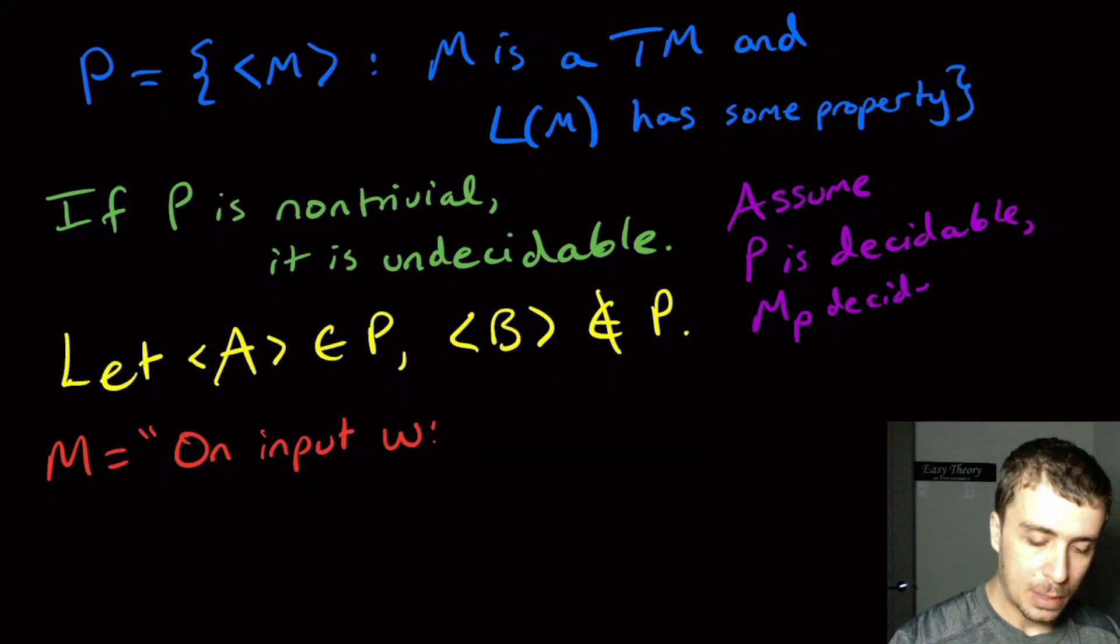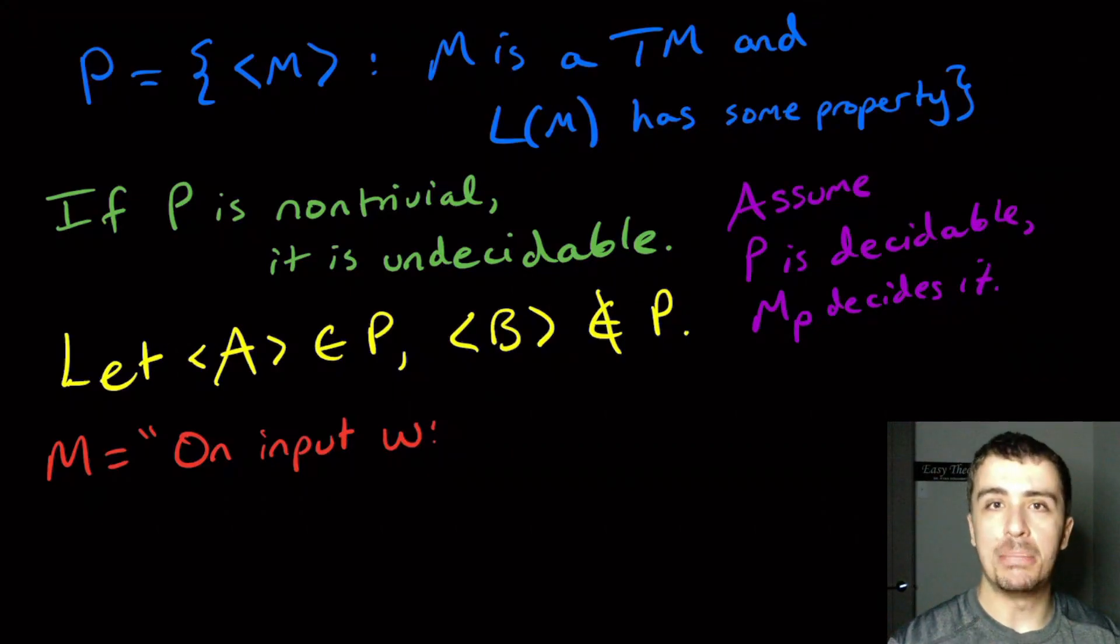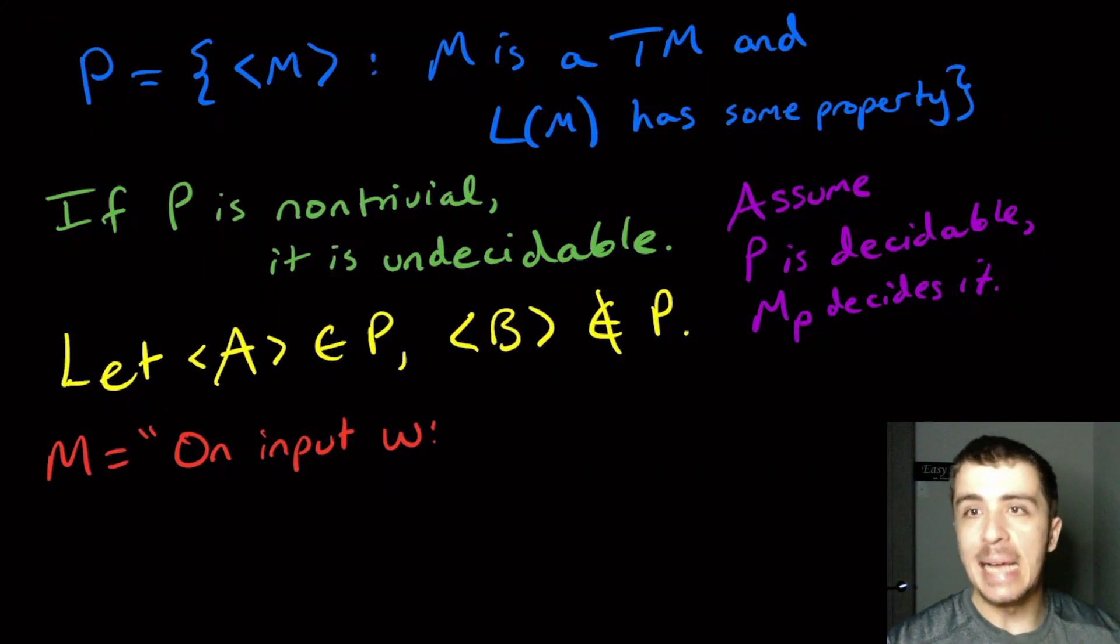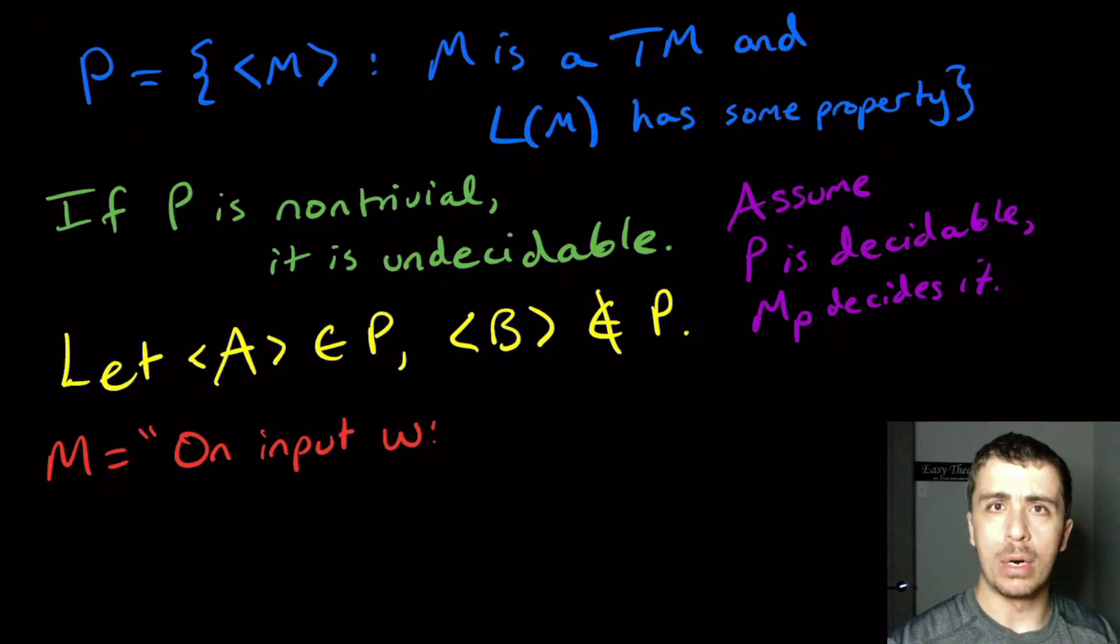Let's call the machine MP that decides it. MP is the Turing machine that decides P, so it gets an arbitrary Turing machine and it decides whether or not that Turing machine has that non-trivial property.